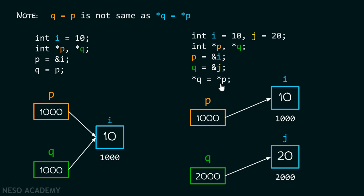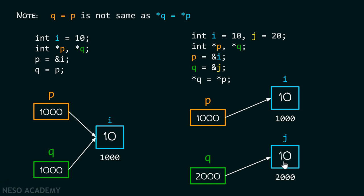With the help of this statement *q = *p, what we are trying to do is simply access the content of the location pointed by pointer p. Star is the dereference operator which helps us take the value stored at the location pointed by the pointer. This pointer p is pointing to the 1000th location which contains value 10, so with the help of star p we access 10, and with star q we access 20. With this statement, we are trying to replace value 20 with value 10. Therefore after this assignment statement, value 20 will get replaced by 10.